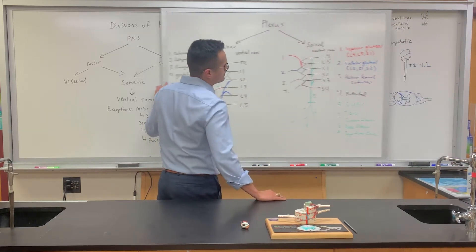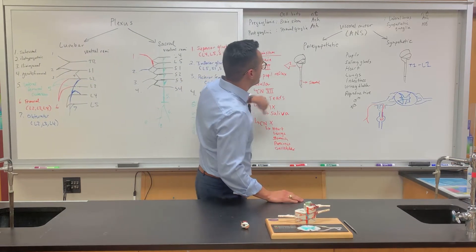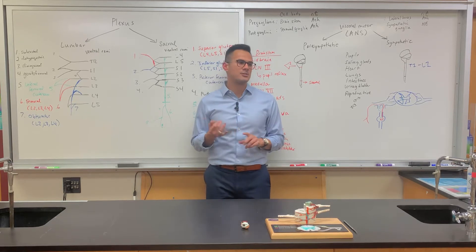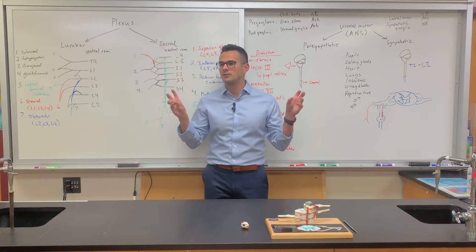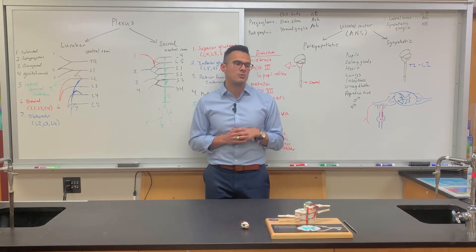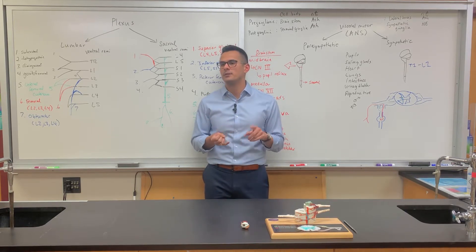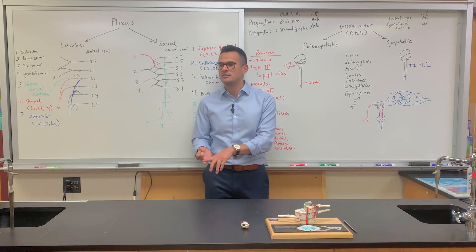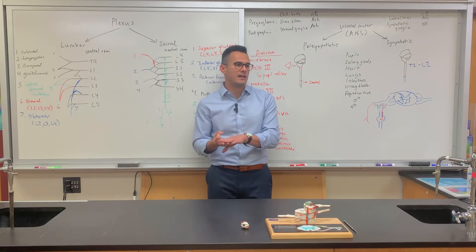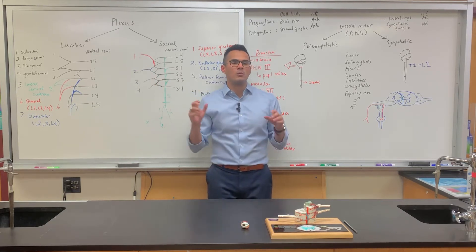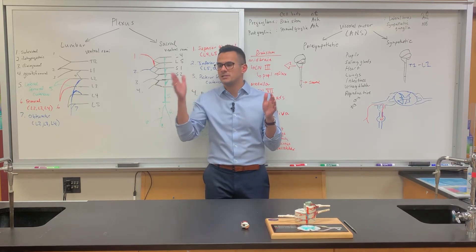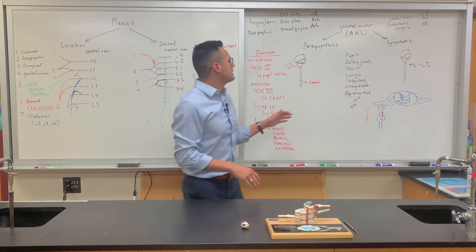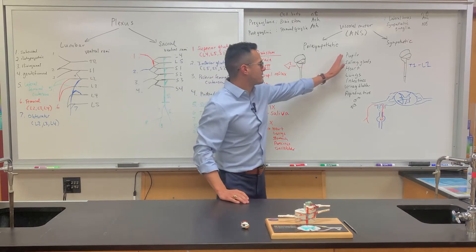The visceral motor system is divided into two main parts: the sympathetic nervous system and the parasympathetic nervous system. There are a couple of catchphrases to describe both of them. The sympathetic nervous system is called the fight-or-flight response. For the parasympathetic, one phrase is rest and digest, and another is feed and breed. Let's talk about what the effect is depending on which system you stimulate.